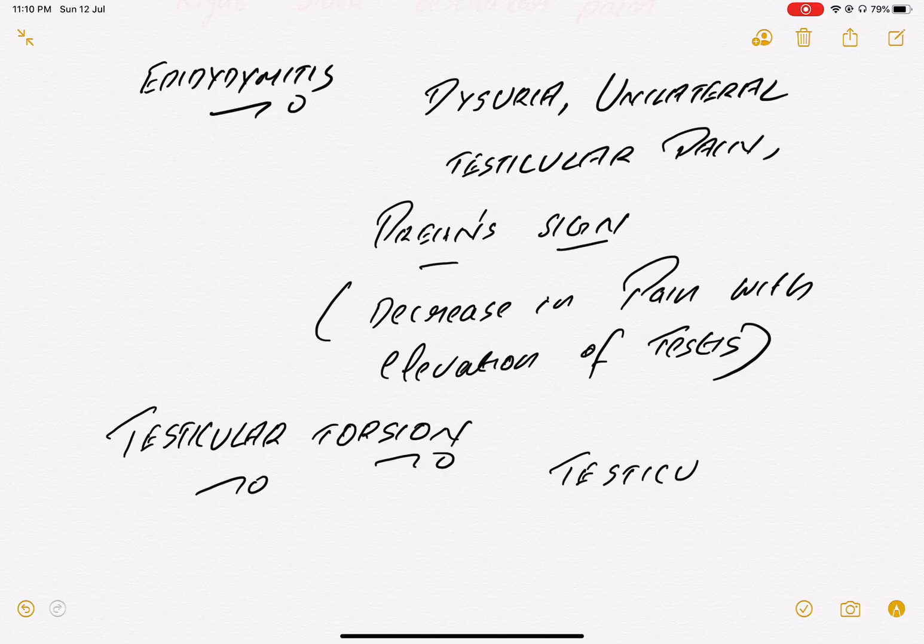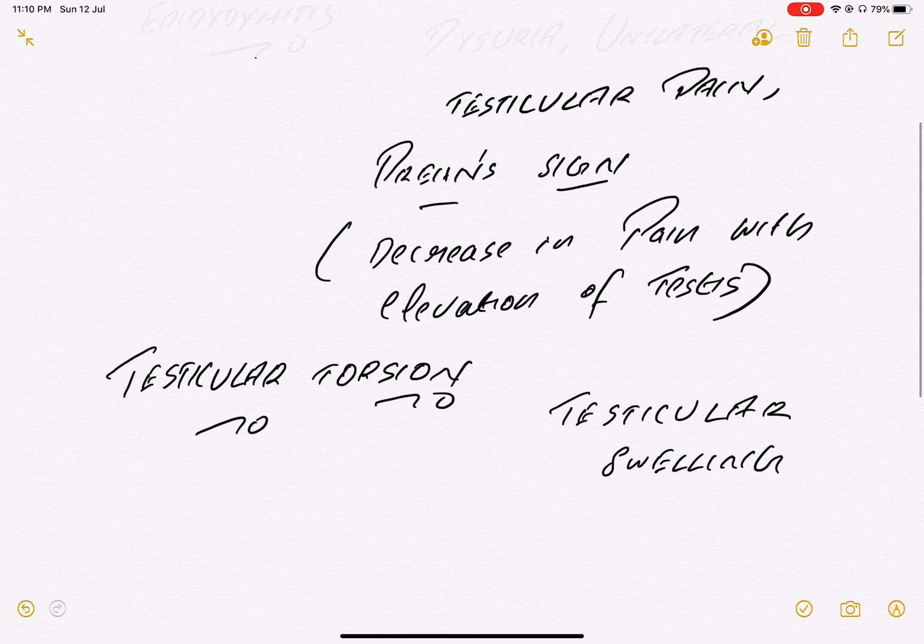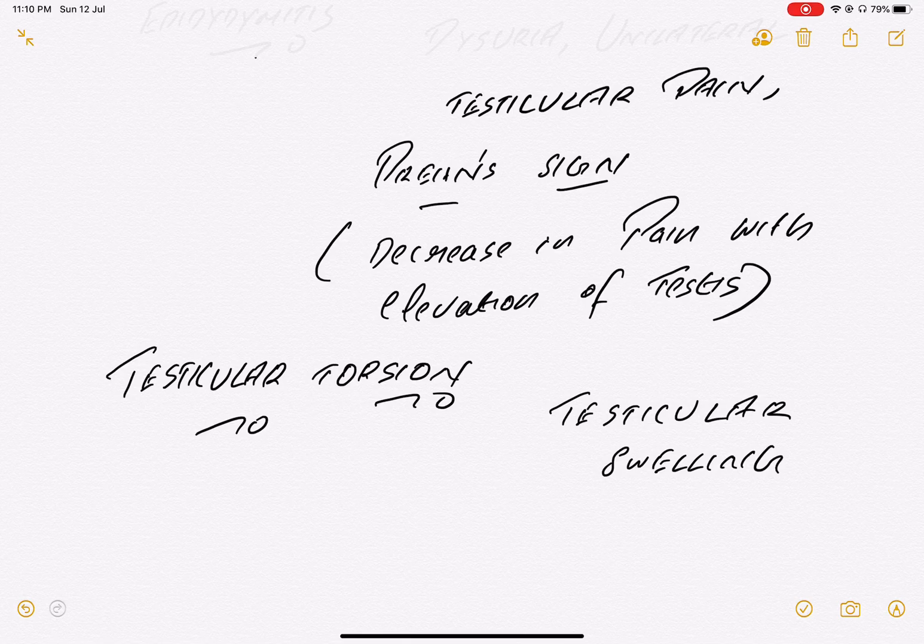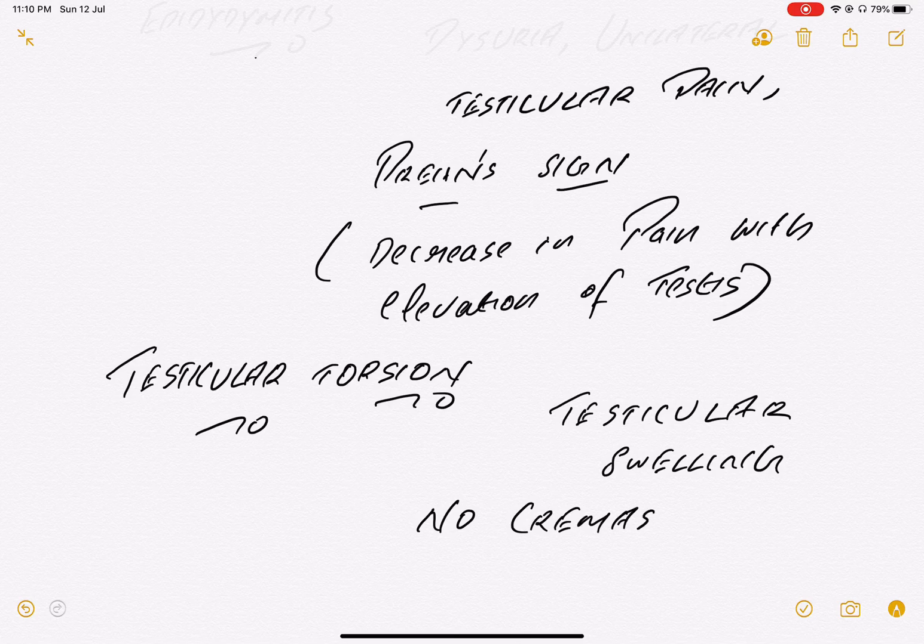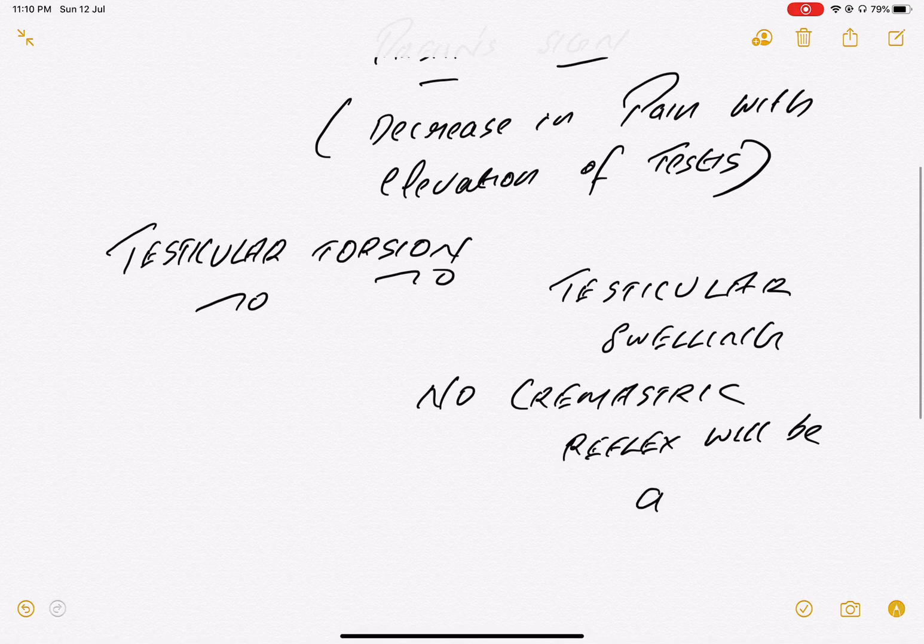Testicular swelling. Normally if you elevate the testis, the cremaster muscle will contract, but what will be lost in the case of testicular torsion? The cremasteric reflex will be aroused. So remember, the cremasteric reflex will be absent in this case. The reflex will be absent. Cremasteric reflex means when you elevate the testis, the cremasteric muscle normally constricts, but once you have torsion...